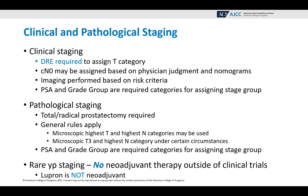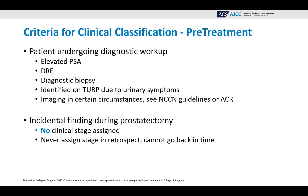There is very rare YP staging, as there is no neoadjuvant therapy outside of clinical trials. Lupron is not neoadjuvant therapy and is given for a very different reason, not as treatment. The criteria for clinical classification — also called pretreatment — requires a patient undergoing diagnostic workup. This usually includes an elevated PSA, DRE, diagnostic biopsy, identification on TURP due to urinary symptoms, and imaging in certain circumstances. An incidental finding during a prostatectomy has no clinical stage assigned. Never assign stage in retrospect — you cannot go back in time.